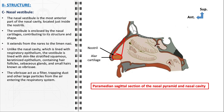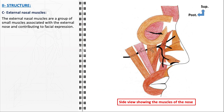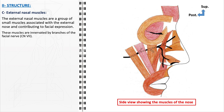In summary, the nasal vestibule serves as a vital component in the nasal anatomy, bridging the external environment with the internal respiratory system. Its strategic location, unique lining, and the presence of vibrissae underscore its role in air filtration and respiratory protection. Regarding the external nasal muscles, these are a group of small but functionally significant muscles associated with the external nose, playing a key role in facial expressions and the movements of the nose. These muscles are innervated by branches of the facial nerve.